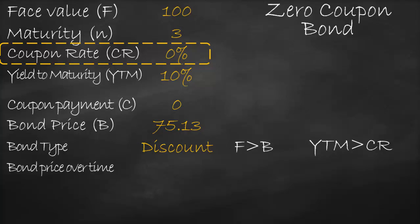What will be the bond price over time? For a discount bond, the bond price is lower than face value, and at maturity the bond price must equal face value. Therefore, the bond price of a zero coupon bond will increase every period until it reaches face value at maturity.